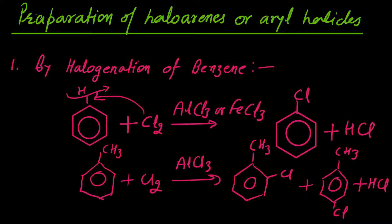Para position पे chlorine attach हो जाएगी और HCl byproduct के रूप में निकलेगा। तो यह था halogenation और benzene से किस तरह से halogenation की formation कर सकते हैं। Bromination भी same conditions में होगी, Br2 के साथ reaction होगा।